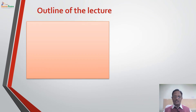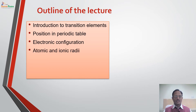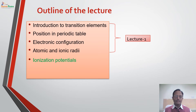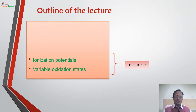The outline of the lecture is: Introduction to Transition Elements, Position in Periodic Table, Electronic Configuration, and Atomic and Ionic Radii. These four topics we have covered in the first lecture of this module. In this second lecture, we will be discussing about Ionization Potentials of 3D series elements and Variable Oxidation States of 3D series elements.